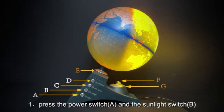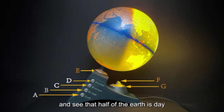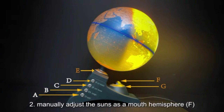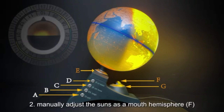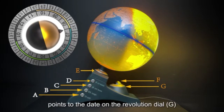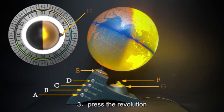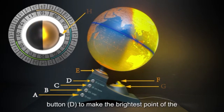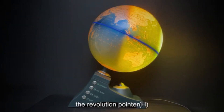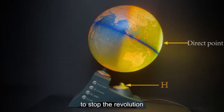Press the power switch A and the sunlight switch B to see that half of the Earth is day and half is night. Manually adjust the Sun's azimuth hemisphere F so that the revolution pointer H points to the desired date on the revolution dial G. Then press the revolution button D to make the brightest point of the direct sunlight consistent with the revolution pointer H, then stop the revolution.